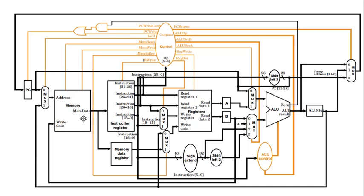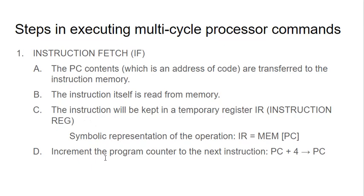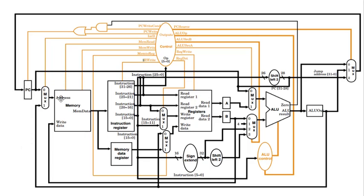Reading from memory takes time. There is one other thing that happens simultaneously: we increment the program counter to point to the next instruction. The PC points to the current line, but we already have the opportunity to compute PC plus 4 — plus 4 because each instruction is 4 bytes long. We can see in the diagram that the PC goes into the memory address and also travels across to the ALU input.